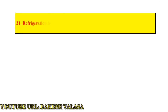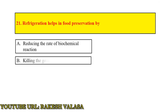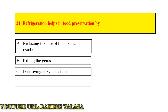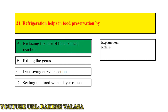Question number 21: Refrigeration helps in food preservation by — Answer: Reducing the rate of biochemical reactions. Explanation: Refrigeration helps in food preservation by reducing the rate of biochemical reactions.